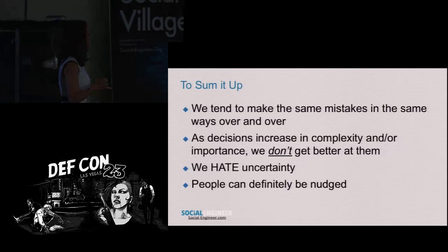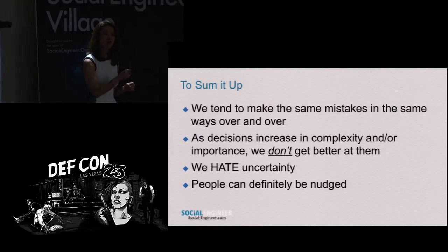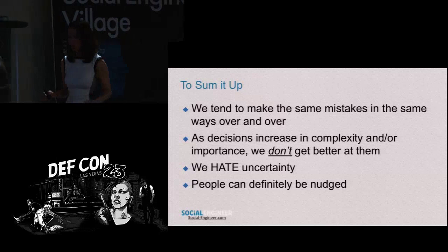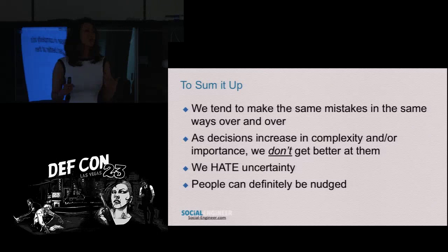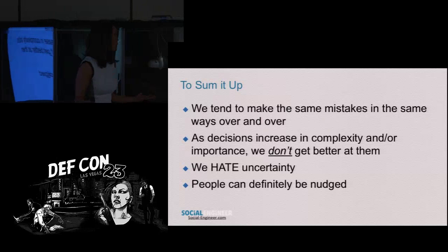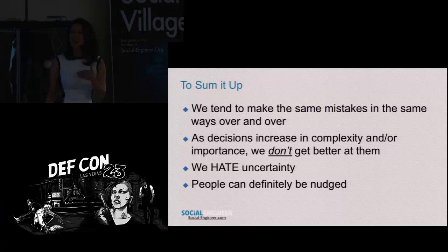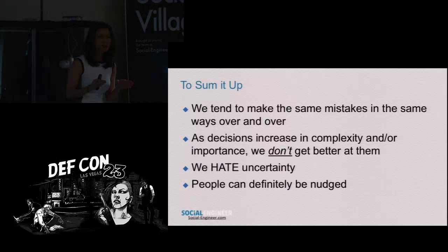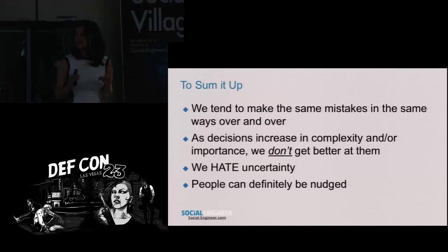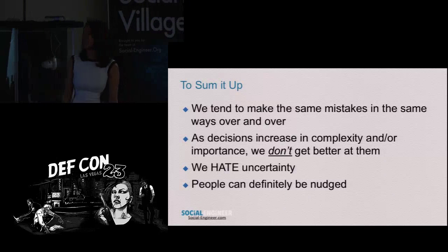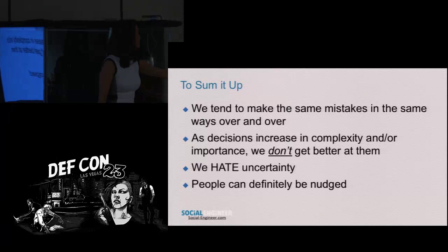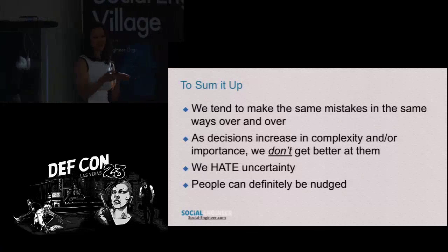To sum it up: we tend to make the same mistakes in the same ways over and over again, which makes us relatively predictable because we have biases and use shortcuts. As decisions get more complex or critical or life-threatening, we don't necessarily get better at them — we're overloaded and will allow people, the situation, or the frame to make the decision for us. We hate uncertainty. And lastly, people can definitely be nudged — whether for their benefit or their detriment — by the situation and how it is framed.